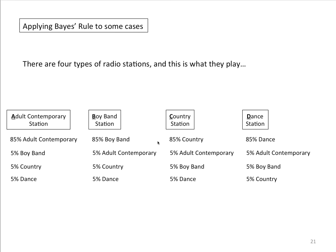The two examples I'll go through rely on this picture. There are four types of radio stations: A, B, C, D — adult contemporary, a boy band station, a country station, and a dance station. All the radio stations play 85% of their own genre and 5% of the other three genres.